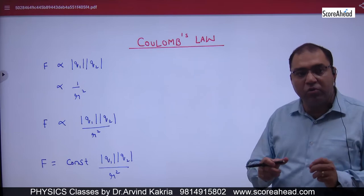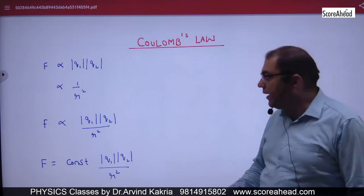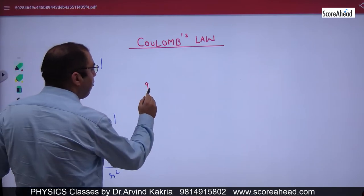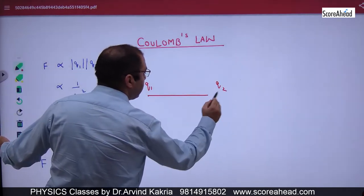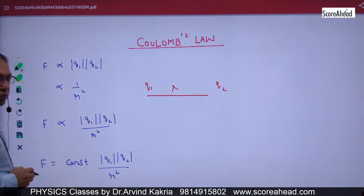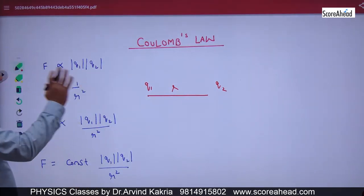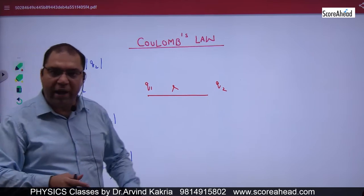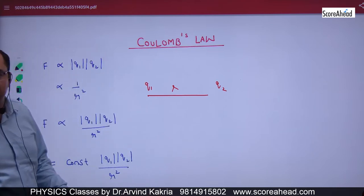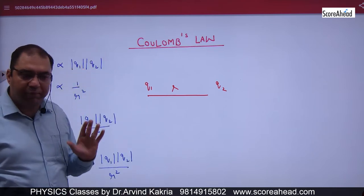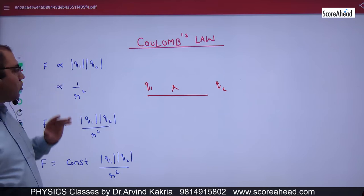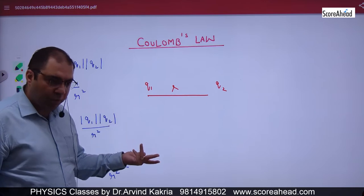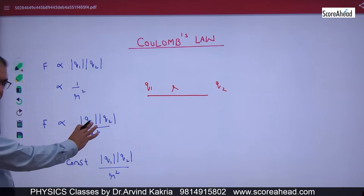If you have two charges Q1 and Q2 — and it is important that these are point charges, not charges distributed on a body — if Q1 and Q2 are point charges separated by distance R, the force will be either attractive or repulsive. The magnitude of force is proportional to the product Q1 times Q2, and inversely proportional to R squared.